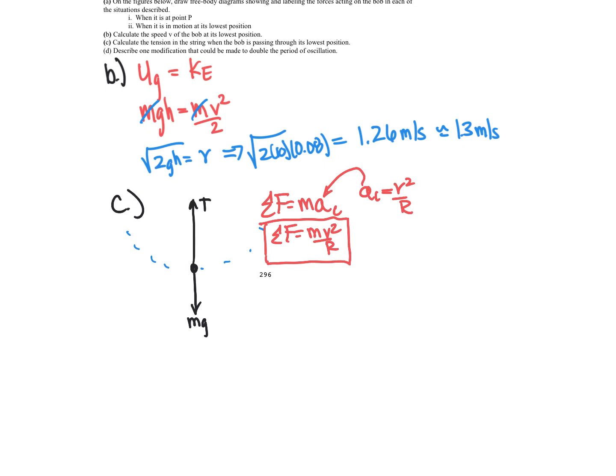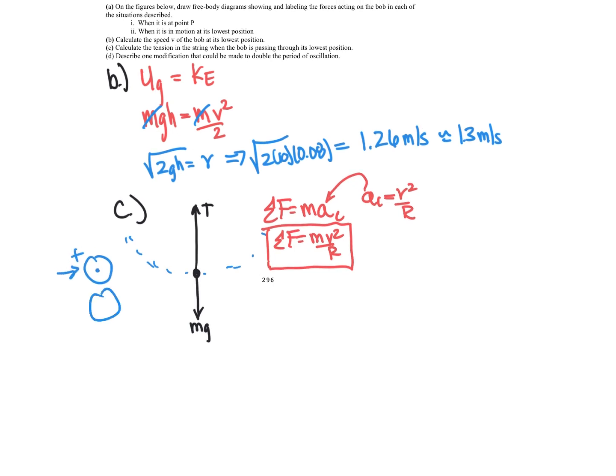So now all we have to do is solve for this. So our net forces. So as this object's moving in a circle, I teach my kids any things that center's seeking, so any object or any vector that's going towards the center, we make positive. Any vector that's going away from the center, but still in line with the center, we make negative.